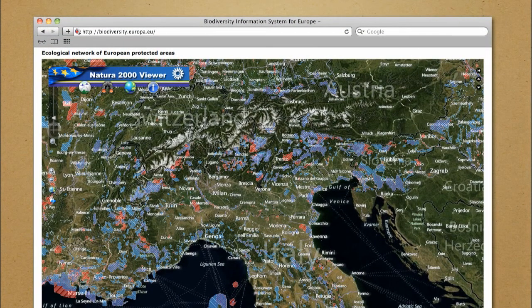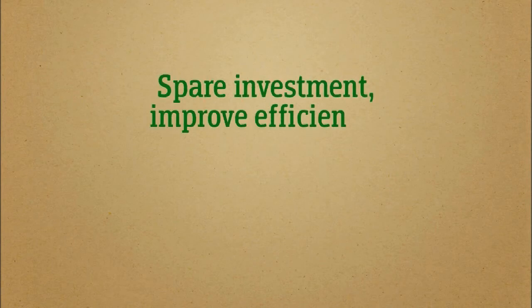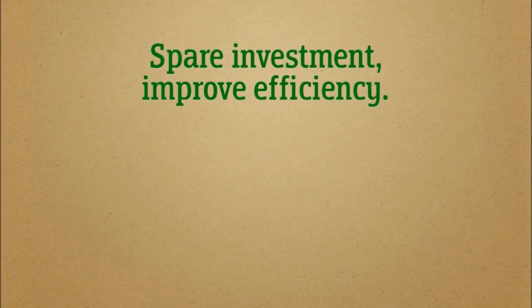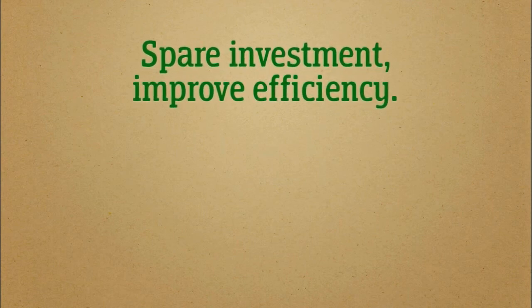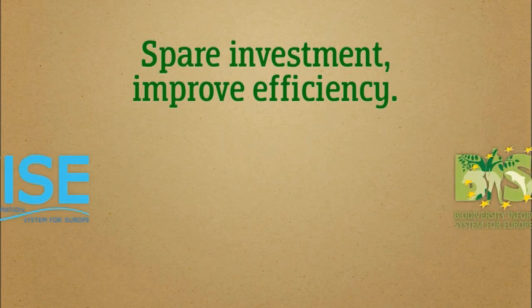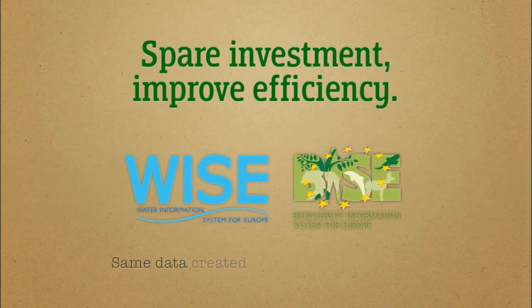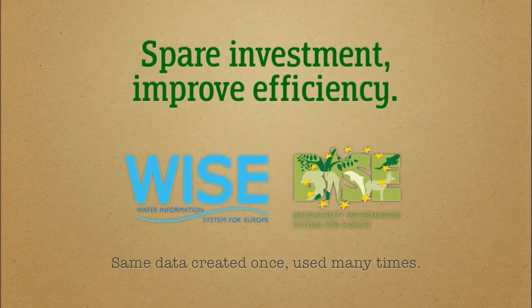With these two examples, we see how SDIs help in answering specific end-user questions by retrieving on-demand maps with up-to-date information. This represents a much more efficient way of spending public money, especially in a time of repeated national debt crises. WISE and BIES show how the same data can be shared by different systems for different purposes using web service interfaces and open standards. The idea is to create each dataset once and reuse it as many times as possible.